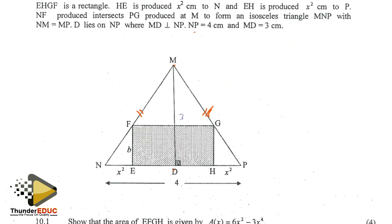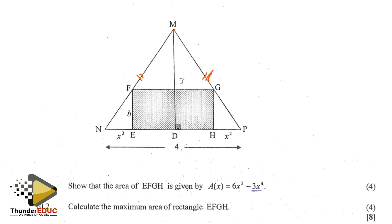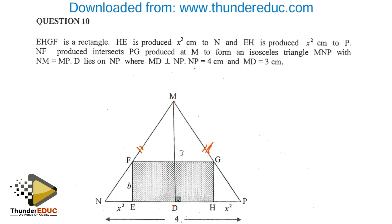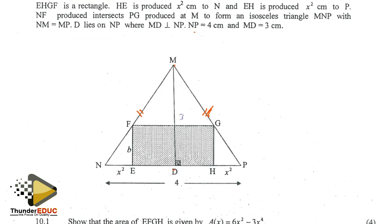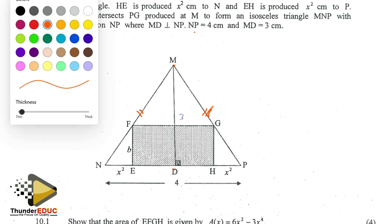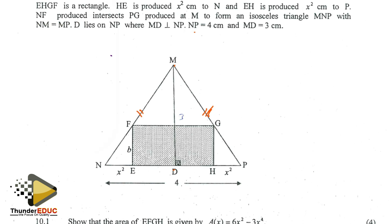The first question: show that the area of EFGH is this expression, for maximum. When I first looked at this question I was a bit worried and stressed. But then they gave us this as 19, and we know that with a rectangle the interior angles are 90 degrees.